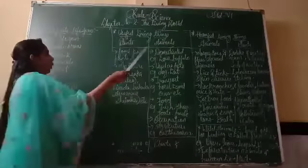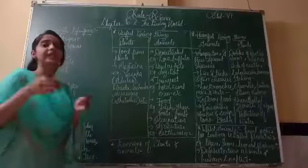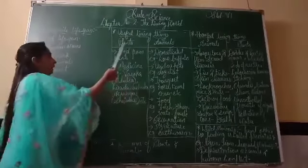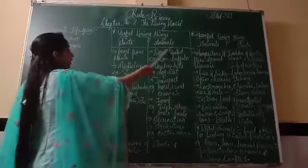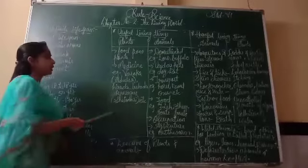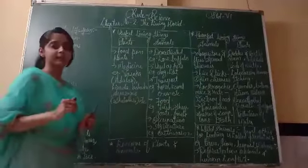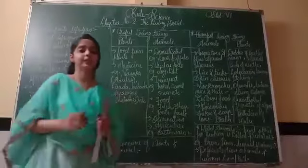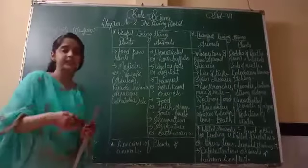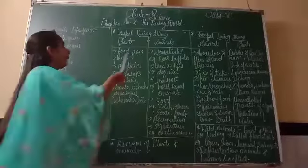Now the next point is useful living things. Useful means which is helpful to us. Like human beings, we have useful plants and useful animals. First, let us discuss plants. Plants and trees give us food — fruit, food grains, and vegetables. All of these we get from plants.